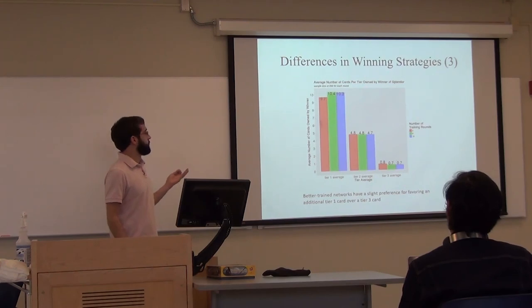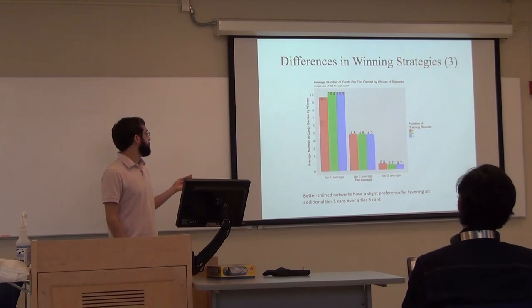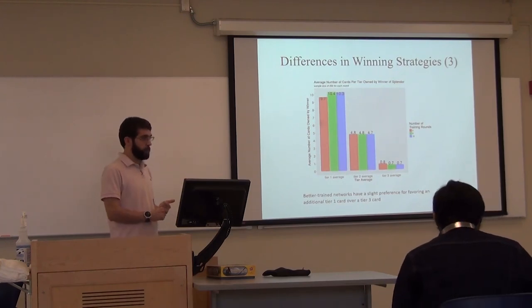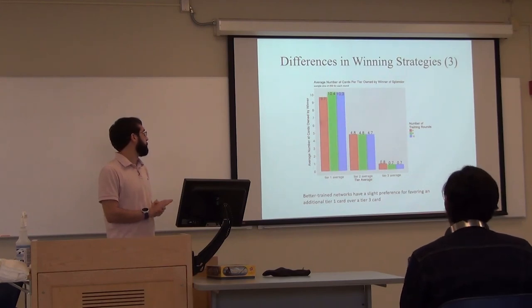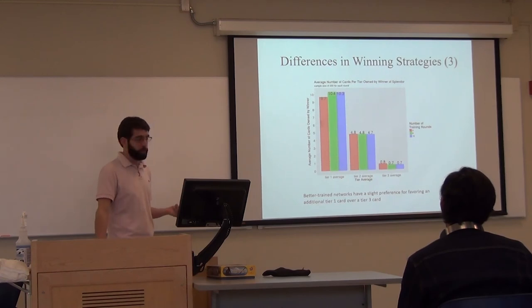There are three different tiers of cards. Tier one is the least expensive, tier three is the most expensive. It seemed that there wasn't too much of a difference except that more of the players who had more rounds of training probably got the cheaper cards to complete the objectives faster. Since they still count as one card with a color, but they cost less.